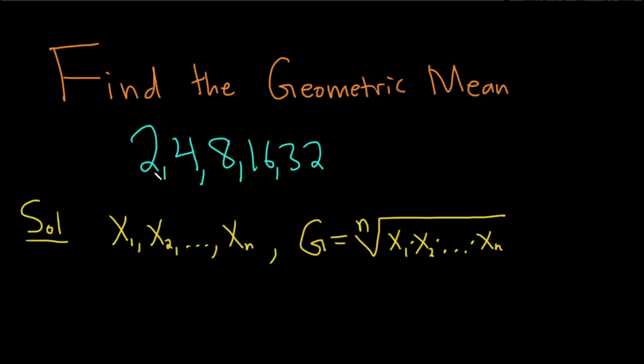So here we have 1, 2, 3, 4, 5 numbers, so n will be 5, and so we have g is equal to the 5th root of, and then we just have the product, 2 times 4 times 8 times 16 times 32.